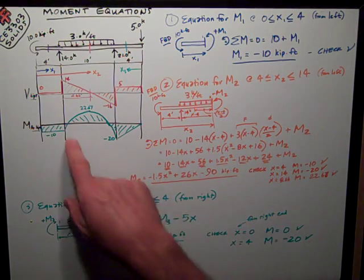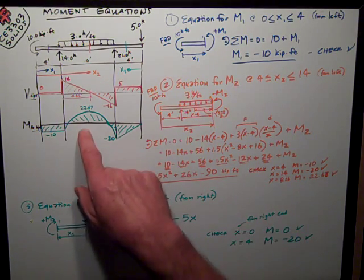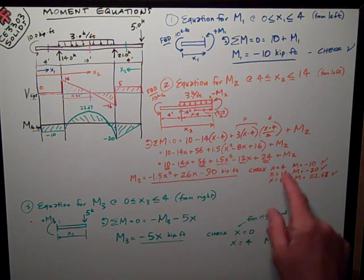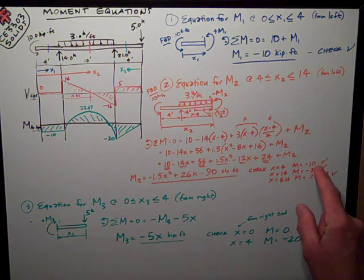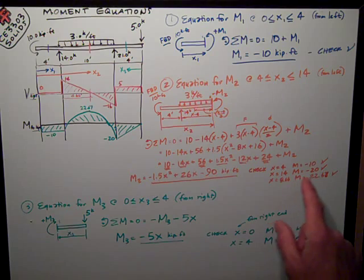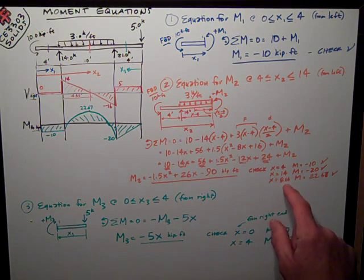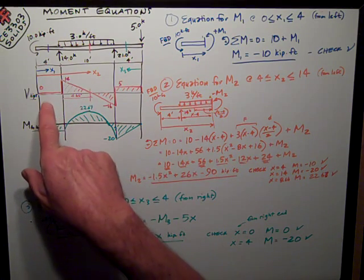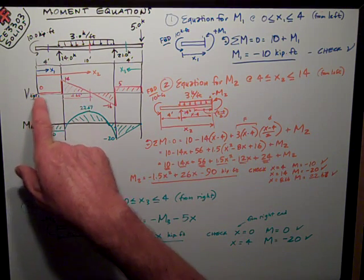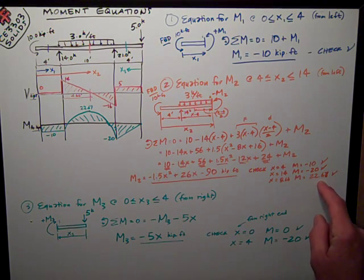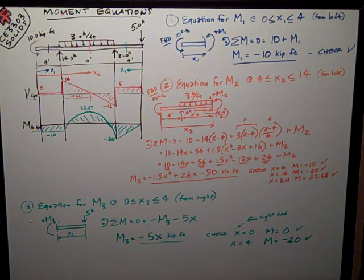I can check it at the three points on the moment diagram. At x equals 4, plug in x equals 4 to this equation, I get m is equal to negative 10. 14 at the other end, I get m is equal to minus 20. Plug in 8.66, that point of the vertex maximum moment, which is 4 plus 4.66 up here, and I get, sure enough, 22.67 kip feet. So all three of those check. I feel real good about my equation.